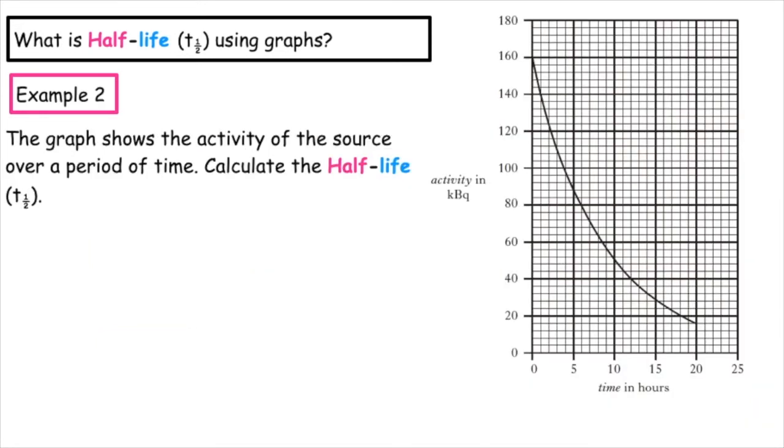Example two, it gives us a graph and asks us to calculate the half-life of this source over a period of time. So what we can see is on the y-axis, that is where the activity is. And the highest number plotted on this graph is at 160.